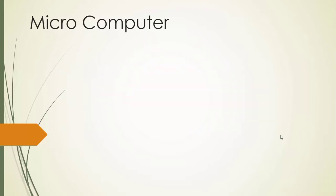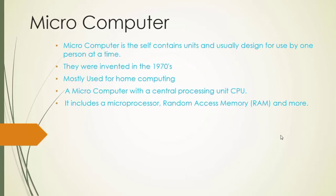Number four: Microcomputer. Microcomputers are self-contained units usually designed for use by one person at a time. They were invented in the 1970s and are mostly used for home computing. A microcomputer includes a central processing unit (CPU), which contains a microprocessor, random access memory (RAM), and storage devices such as hard disk and CD-ROM.